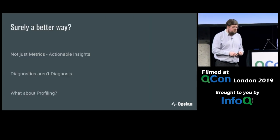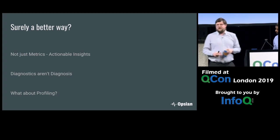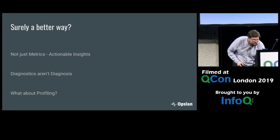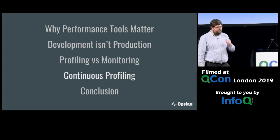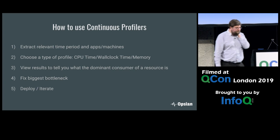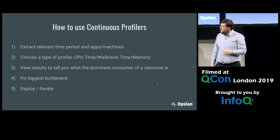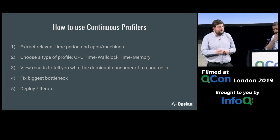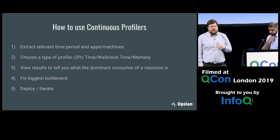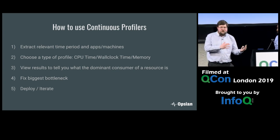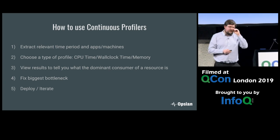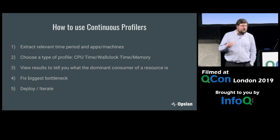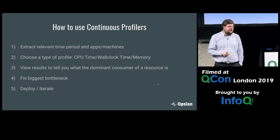So what about continuous profiling? Profiling is attributing resource usage from the system to a component within your software stack — which methods are using CPU time, which lines of code are allocating objects. The workflow is: narrow a problem to a specific time period or machines, look at the type of profile you want to gather, see where the dominant consumer of the resource is in your codebase, fix that bottleneck, deploy, and iterate.